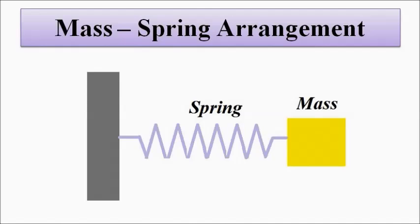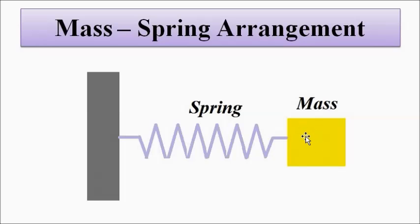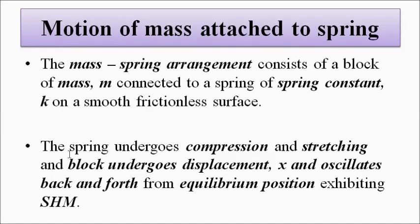The mass-spring arrangement consists of a block with a certain mass placed on a smooth frictionless surface. It is connected to a spring with a certain spring constant k. As this block moves to the left or to the right, it causes compression or stretching of the spring.